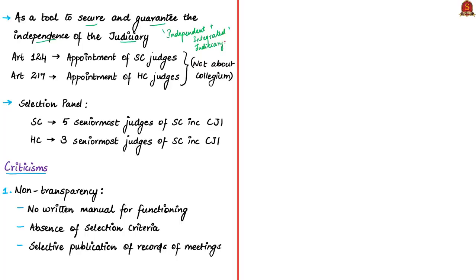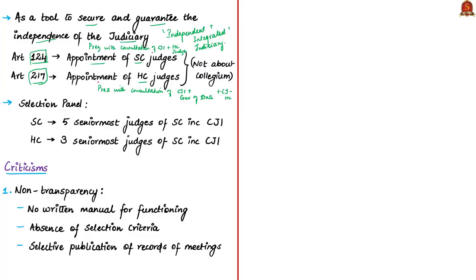Article 124 speaks about the appointment of Supreme Court judges — the judges shall be appointed by the President after consultation with the judges of the Supreme Court, including the Chief Justice of India. Consultation of High Court judges may also be taken if the President deems it necessary. Article 217 speaks about the appointment of High Court judges — the judges shall be appointed by the President after consultation with the Chief Justice of India and the Governor of the State, and in the case of appointment of a judge other than the Chief Justice, the Chief Justice of the High Court shall also be consulted.